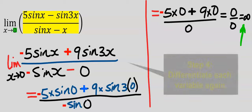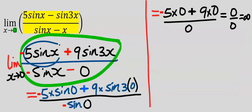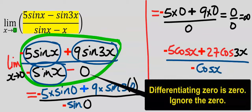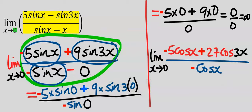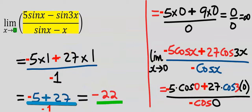Step 4: we differentiate again. Differentiating 5 sin x gives 5 cos x. Differentiating 9 sin 3x gives 27 cos 3x. We also differentiate sin x. Taking the limit as x tends to 0 and substituting 0 for x, our final answer is minus 22.